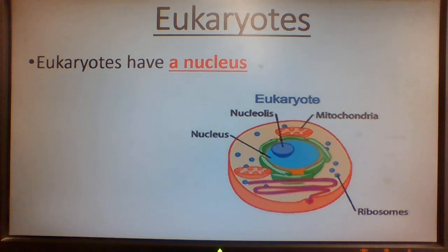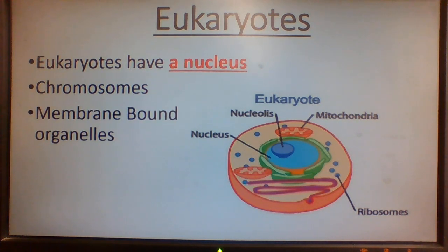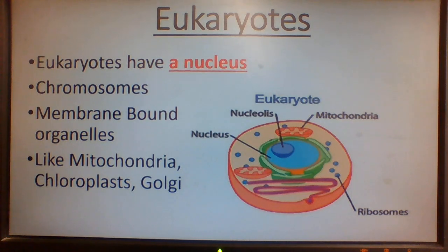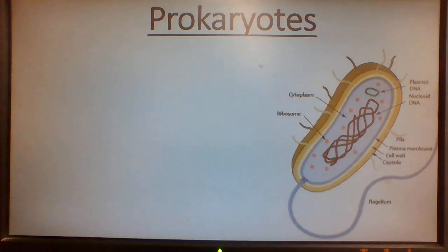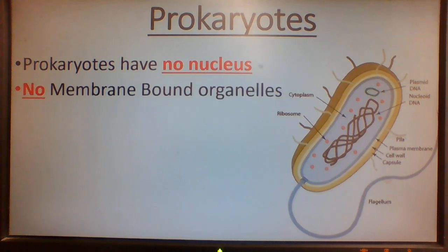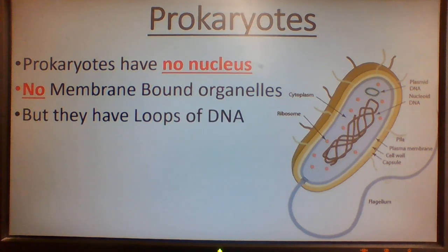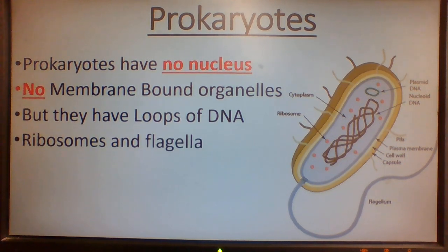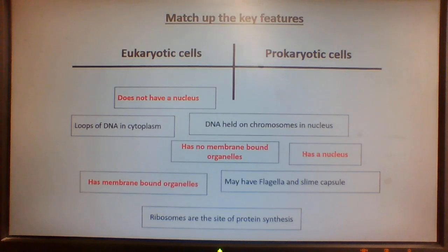Eukaryotes have a nucleus, chromosomes, membrane-bound organelles like mitochondria, chloroplasts in plants, and Golgi. Prokaryotes have no nucleus, no membrane-bound organelles, but they have loops of DNA, ribosomes, and flagella. Now, going back to the matchup activity — can you now match them up?